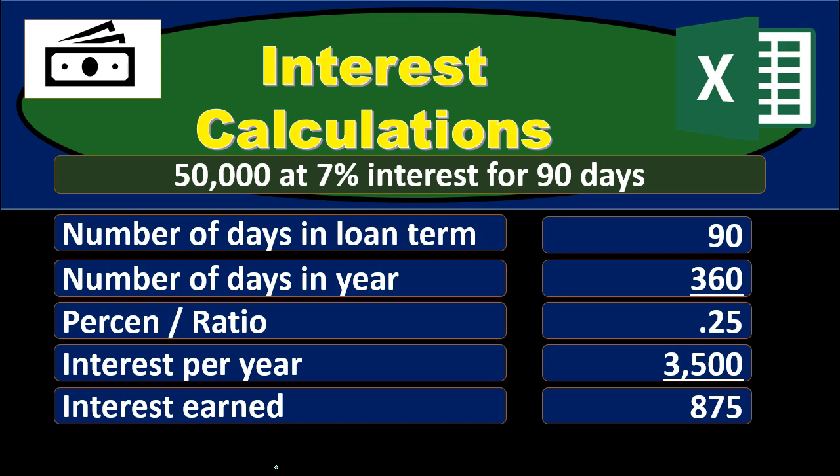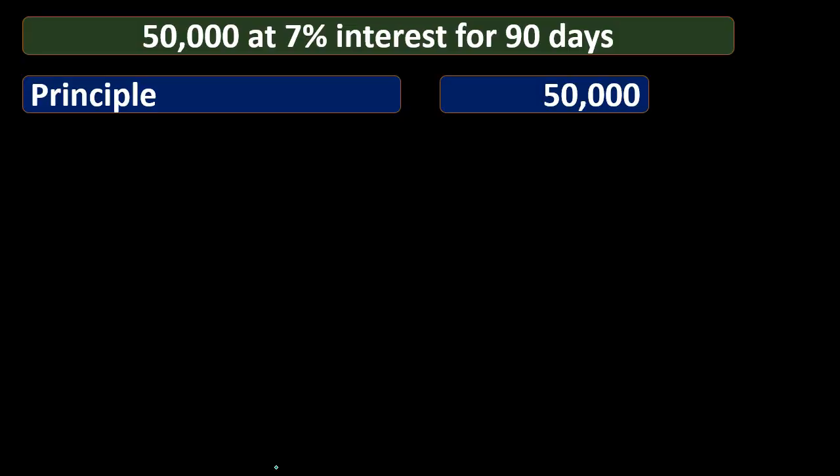Another reason we want to know different methods is just to understand the math a bit better. If we understand different approaches, we understand what we are actually doing a little bit better. Also, different people are going to have different ways of thinking and processing things. So we want to be able to look at someone else's work and understand it. Let's go through a few of these ways we can calculate simple interest.